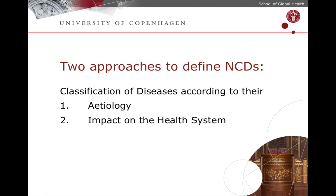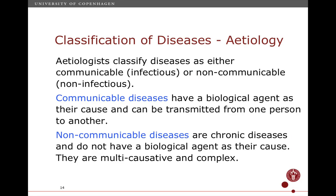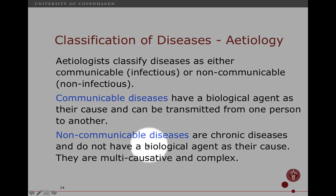Another approach to defining NCDs would be to classify them according to their etiology — their cause — or alternatively through their impact on the health system. All the definitions so far used a mix of both, but focused originally very strongly on etiology. If you look at the cause of the disease, you have this classic dichotomous world of communicable diseases and non-communicable diseases, where NCDs are defined as chronic diseases which do not have a biological agent as their cause — and we already highlighted that this might be a problem.